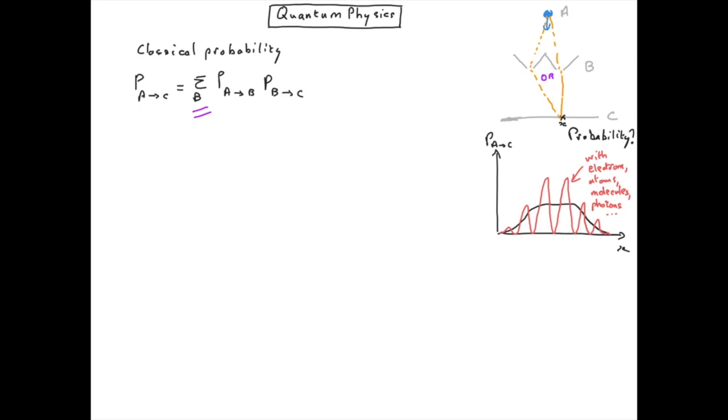So this is quite puzzling. You may say that maybe the individual probabilities P from A to B and P from B to C are themselves oscillating rapidly and are responsible for these oscillations of the probability. However, a simple experiment is simply to block one of the holes and what you will find then is something which looks like the classical probabilities I've reported here in black.